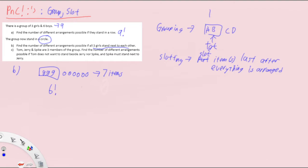But we're not done yet, because all we've done is arrange the group of girls with the six boys. Notice that the girls themselves also need to be arranged within their group — three factorial. So the answer is 720 times 6, which gives us 4320.